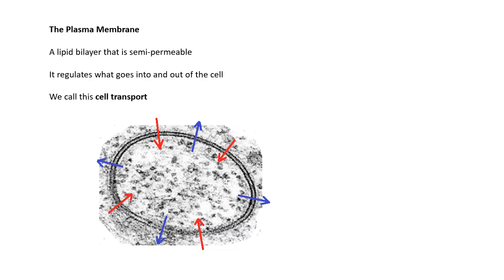It's made of these molecules called phospholipids. A bilayer, as in there are two layers next to each other, and semi-permeable, as in some stuff can get through and other stuff can't. A lipid bilayer that is semi-permeable, and it regulates what goes into and out of the cell, which is cell transport.